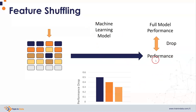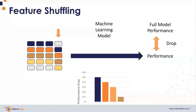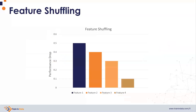We use the model to obtain predictions, we obtain the performance, and we calculate the drop, which constitutes the importance of this third feature. Finally, we do the same for the final feature. Now if we were just interpreting these models globally, this is exactly what we need: the drop in performance obtained after shuffling each one of the features. And the higher this performance drop, intuitively the more important this feature is.